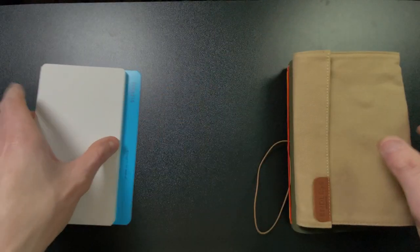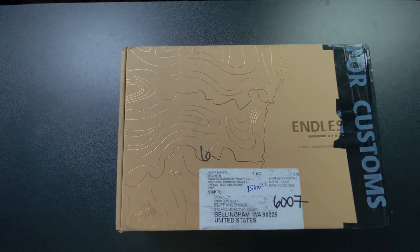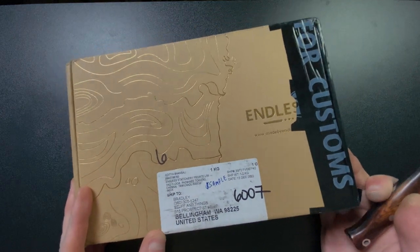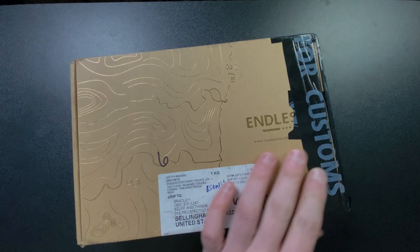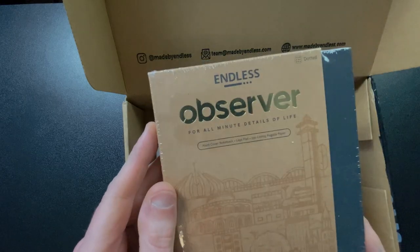I have the box here. This is their Observer notebook. I'm going to crack this open right now and give you a peek of what it is. Looks like Customs decided to peek inside this box, make sure there wasn't anything evil inside it. Inside we have the Endless Observer for all minute details of life.